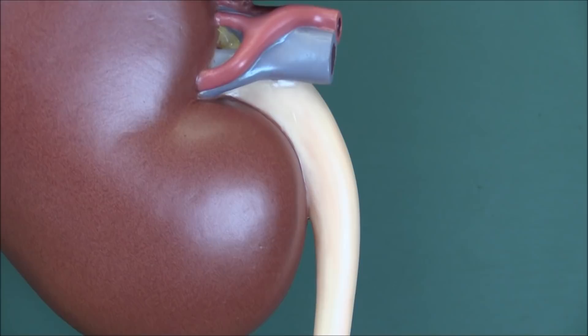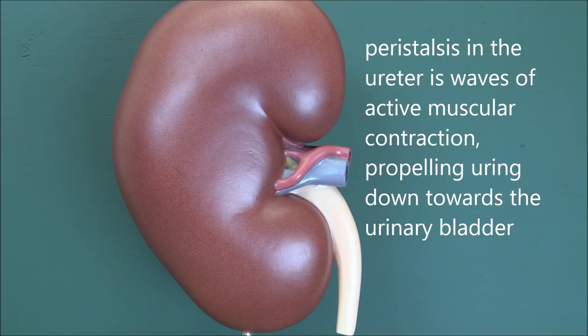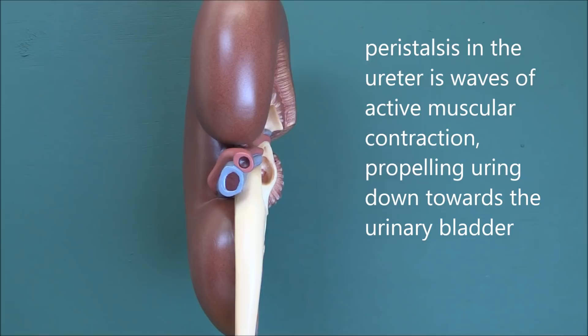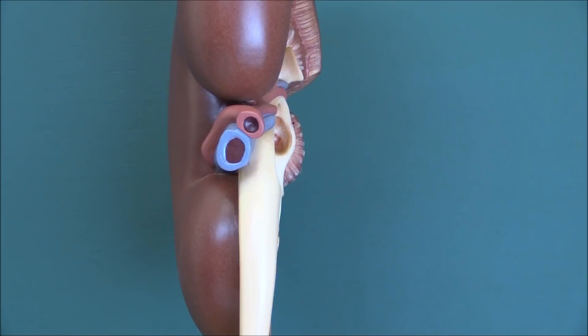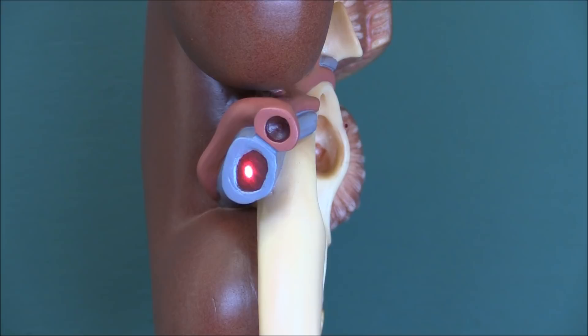The ureter has muscular walls and the transport of urine from the kidney down to the bladder is an active peristaltic process. Looking at the kidney side on, we can see the lumens of the vessels — the arterial lumen and the venous lumen — and here's another view of the ureter. Also going in and out through the hilum, not illustrated on this model, there are lymphatic vessels draining the kidney and nerves going in and out as well.